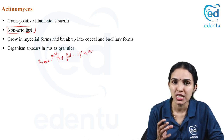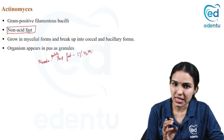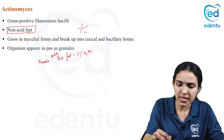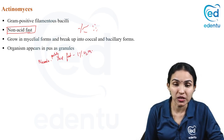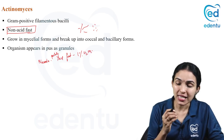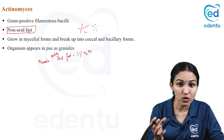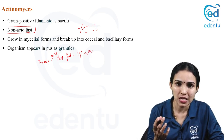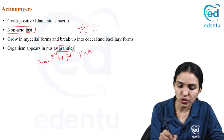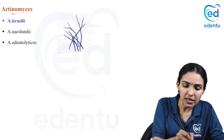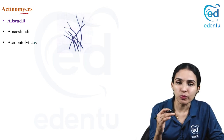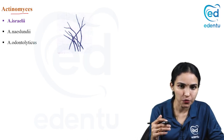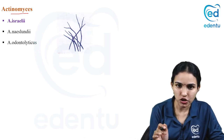When you do gram staining, both actinomyces and nocardia look similar. They grow in mycelial forms as very thin filaments and break up into small bacilli and cocci forms. In pus from lesions, both actinomyces and nocardia appear as granules. Among actinomyces, there are three important species: israelii, naeslundii, and odontolyticus, of which israelii is the most medically important.